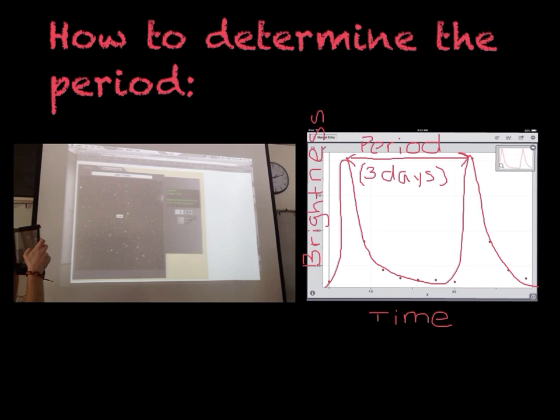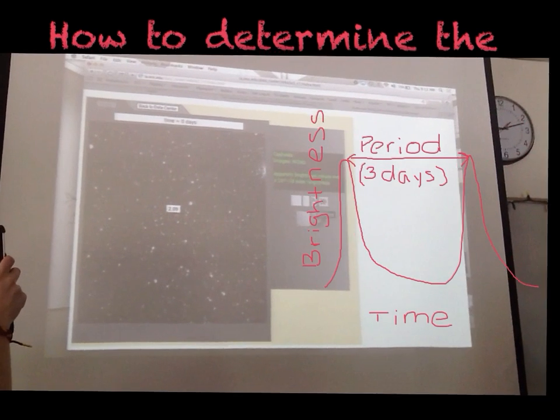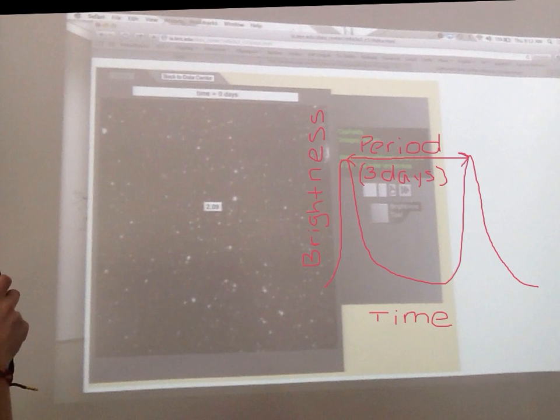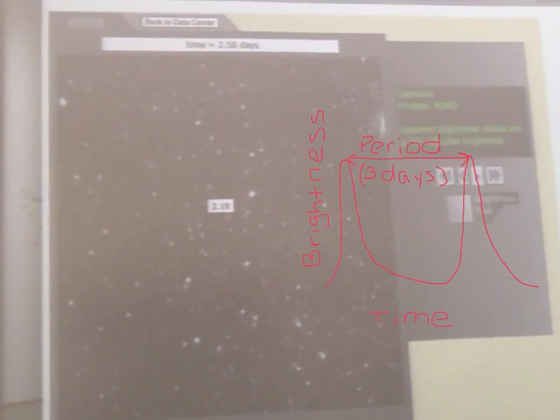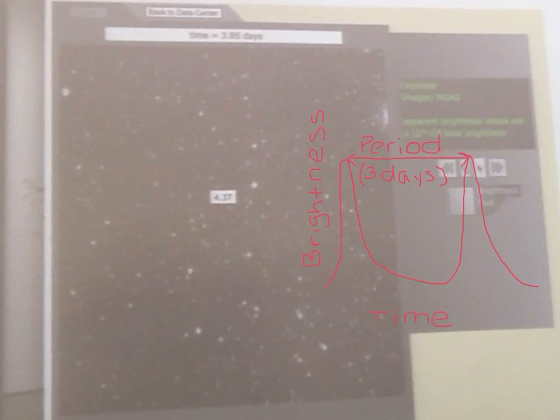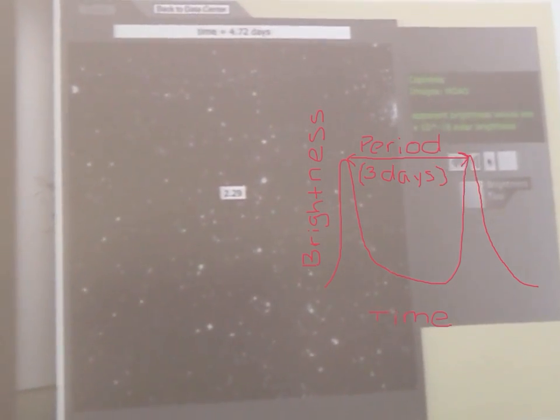How to determine the period? In this video, you can see the Cepheid variable star, and if you look at the numbers, the number is representing its brightness, and you can see that over time it's changing.